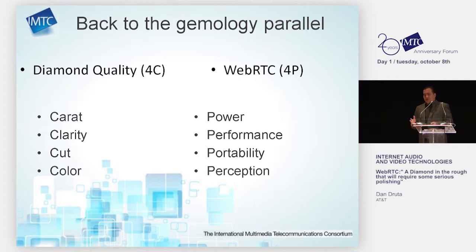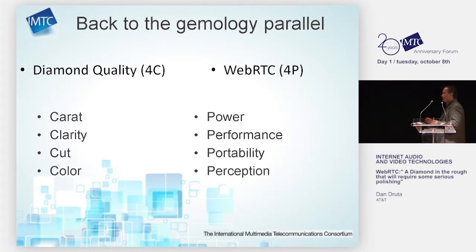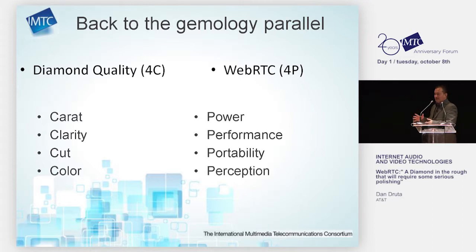I named this presentation 'Diamond in the Rough.' I couldn't resist running a simple parallel with diamonds. I did some research because I'm not into the jewelry business. I just learned that diamonds' quality is determined on 4C characteristics — it's all about carat, clarity, cut, and color. One point is that one is not more important than the other — it's the whole aspect. And when I looked at WebRTC, I thought it's about the same thing, just with different labels: power, performance, portability, and perception.